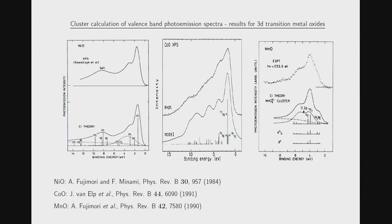An interesting thing is that all these compounds have the rocksalt structure, and nickel, cobalt, and manganese are neighbors in the periodic table. So the LDA band structures look almost indistinguishable. Despite this, the photoemission spectra are totally different. The reason is that what determines the photoemission spectrum is not so much the band structure but the multiplet structure of the transition metal ion.